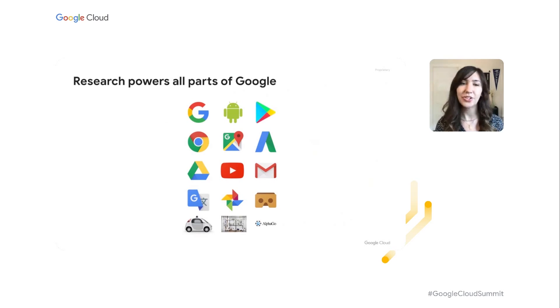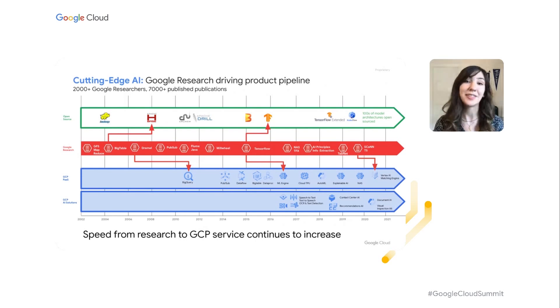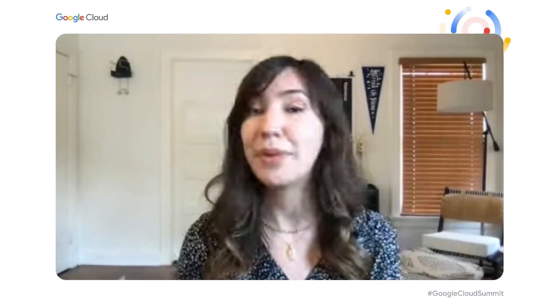Google Research powers all different parts of Google — products like Gmail, Google Search, Lens, Translate — and it also powers tons of different Google Cloud tools. For example, BigQuery, Google's super fast data store, actually started as a result from research; we have an internal version called Dremel. TensorFlow, one of the most popular open source tools for building machine learning models, also started out of Google Research and is now used in all sorts of Google Cloud machine learning pipelines.